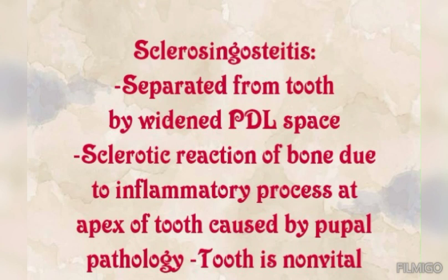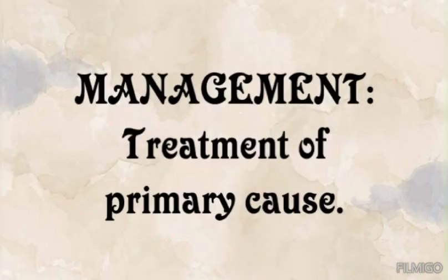Another differential diagnosis is sclerosing osteitis, which is separated from the tooth by a wide periodontal space. It is a sclerotic reaction of the bone due to an inflammatory process at the apex caused by pulpal pathology. The important differentiating point is that in sclerosing osteitis the tooth is non-vital, whereas in hypercementosis the tooth is vital with no signs and symptoms.